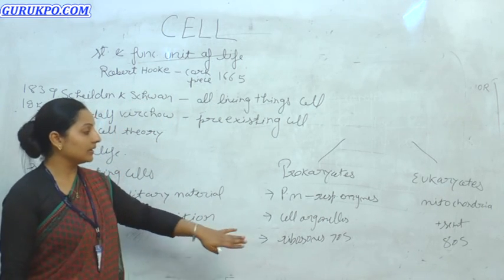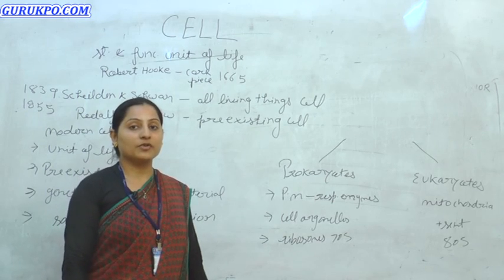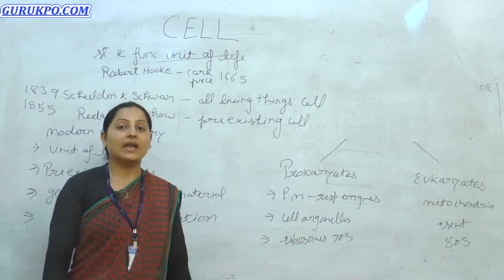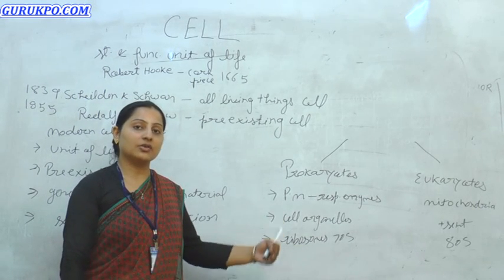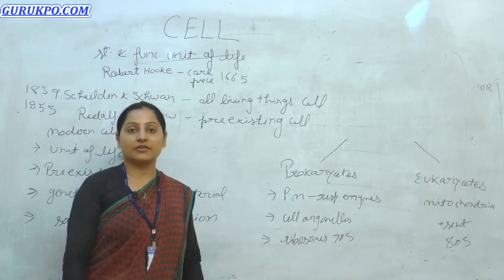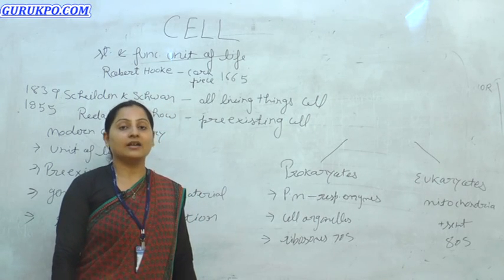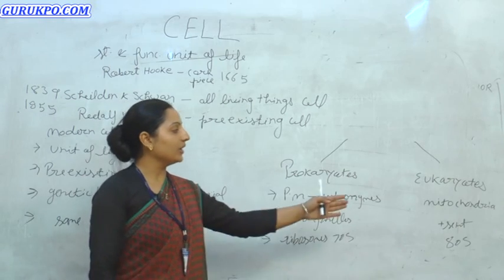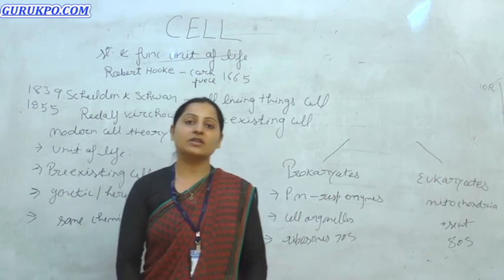In prokaryotes, there is another extra-chromosomal DNA called a plasmid. It is very small compared to the main circular DNA and confers characteristic features such as antibiotic resistance. It is also widely used in genetic engineering. In eukaryotes, the plasmid is absent.